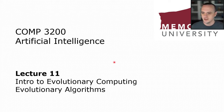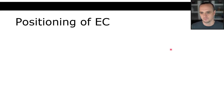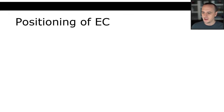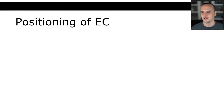Welcome to lecture 11, intro to evolutionary computing. We'll talk about evolutionary algorithms as part of evolutionary computing. EC stands for evolutionary computing, EA for evolutionary algorithms, and GA for genetic algorithms — those are the acronyms I'll be using throughout.